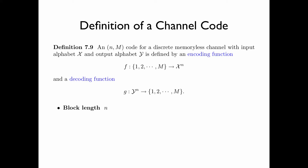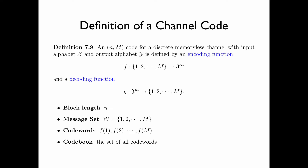In this definition, n is called the block length of the code. The indices 1, 2, ..., m are called messages, and the set of messages, denoted by w, is called the message set. The sequences f(1), f(2), ..., f(m) are called codewords, and the set of all codewords is called the codebook.